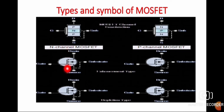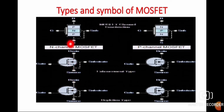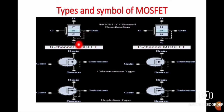In the symbol, for N-channel MOSFET the arrowhead is inward — the middle terminal arrowhead points inward, hence it is N-channel. For P-channel MOSFET, the arrowhead is in the outward direction. Both transistors have three terminals: source, drain, and gate.